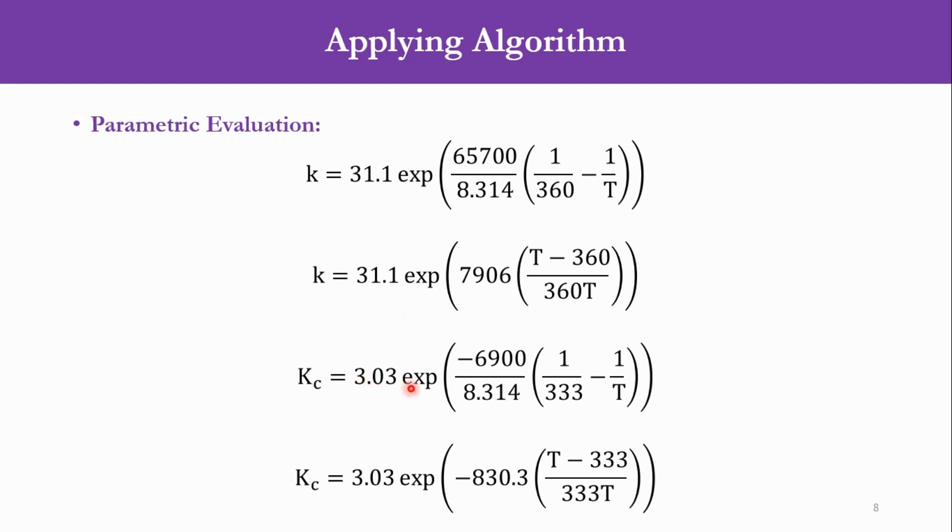Same goes for Kc. It is 3.03, and accordingly delta H which is -6900 and the temperature T2 is 333. And accordingly we get the value as Kc equals 3.03 exponential -830.3 times T minus 333 divided by 333 into T.